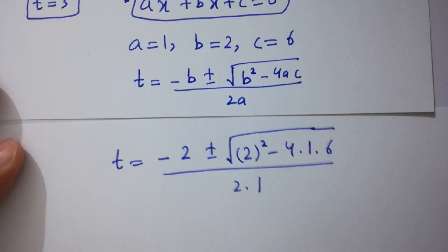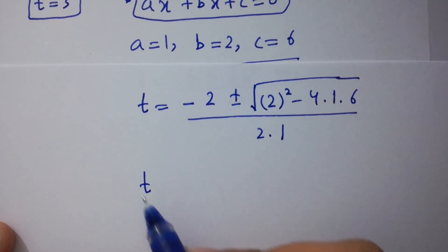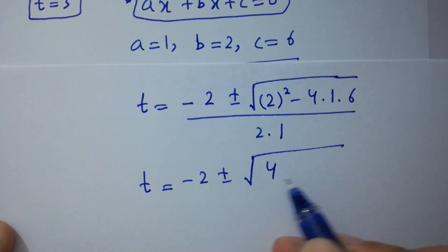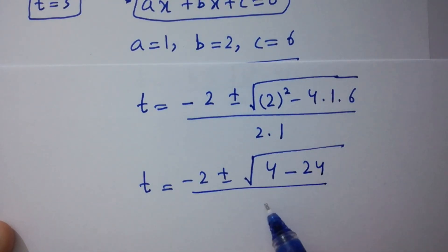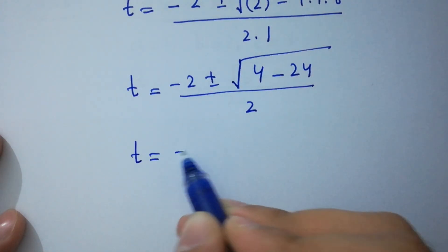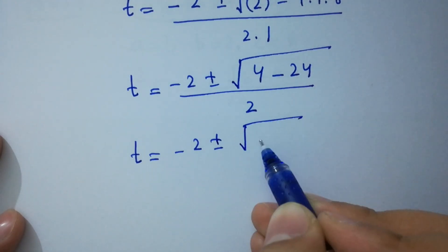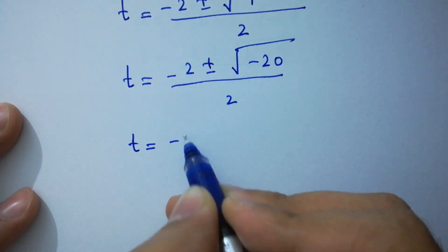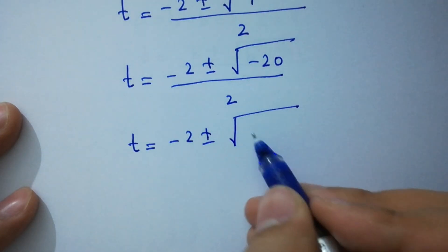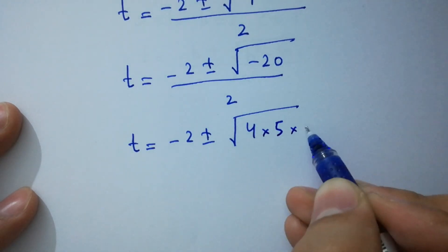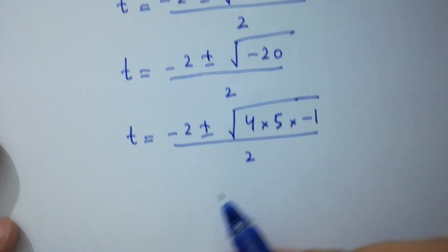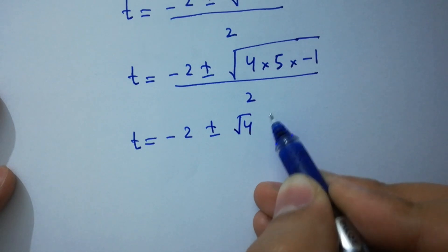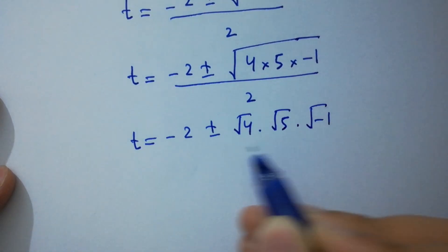So t equals minus 2 plus or minus square root of 4 minus 24, over 2. That gives t equals minus 2 plus or minus square root of minus 20, over 2. We can write minus 20 as 4 times 5 times minus 1, so t equals minus 2 plus or minus square root of 4 times square root of 5 times square root of minus 1, over 2.